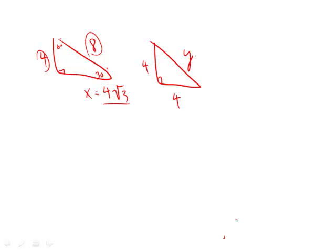Notice an isosceles right triangle. Therefore, it's a 45-45-90, which has sides of x, x, and x√2. If x is 4, then therefore y must be 4√2. And that's it.